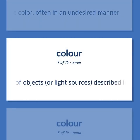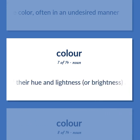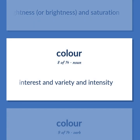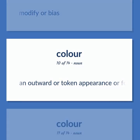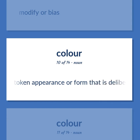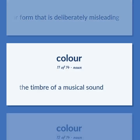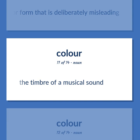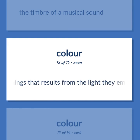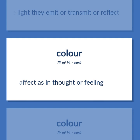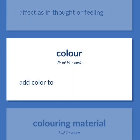The appearance of objects or light sources, described in terms of a person's perception of their hue and lightness, or brightness, and saturation. Interest in variety and intensity. Modify or bias. An outward or token appearance or form that is deliberately misleading. The timbre of a musical sound. A visual attribute of things that results from the light they emit or transmit or reflect. Effect as in thought or feeling.